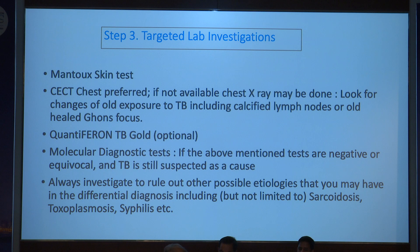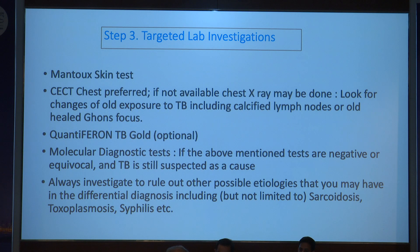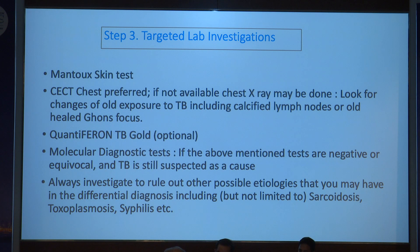Chest X-ray at a minimum should be done; if CT scan is available, prefer a contrast-enhanced CT to look for any old evidence of TB. Molecular diagnostic tests can be performed in selected cases; please refer the patient to a center where molecular diagnosis is possible if facilities are unavailable. Always investigate for any other etiology: sarcoidosis should be ruled out by basic investigations. Syphilis, HIV, and toxoplasmosis testing are also routinely performed in all patients.